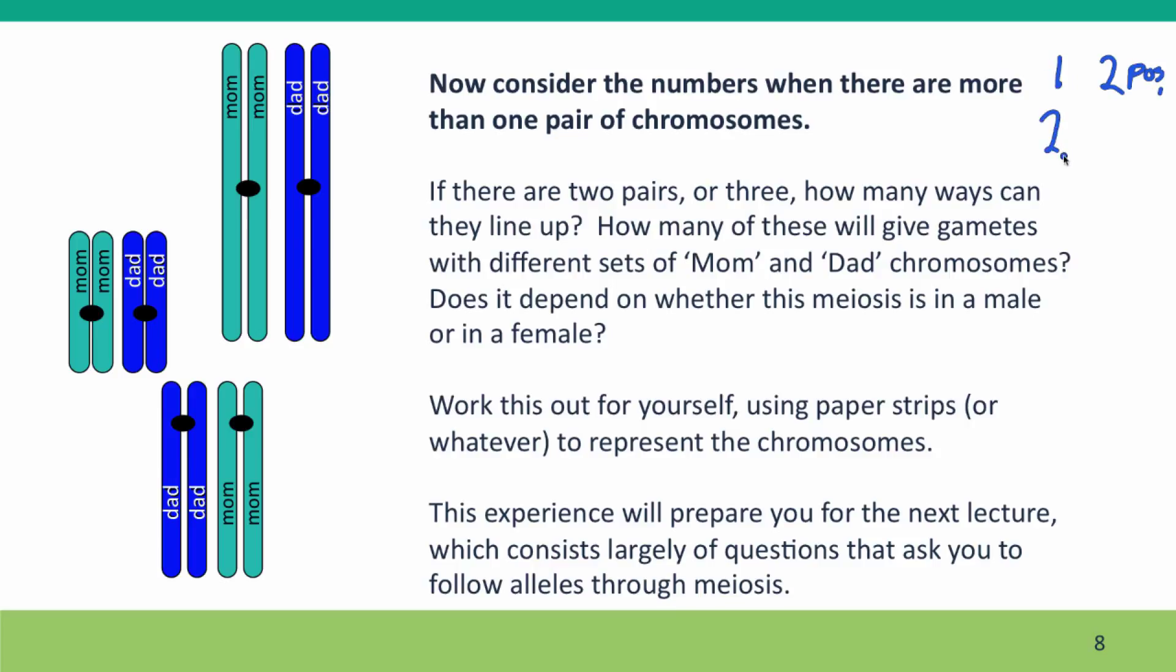If there are two chromosomes, there are four possibilities. If there are three chromosomes, there are eight possibilities. Again, considering situations where it matters whether the chromosome we're thinking about is on the left or the right, on the polar body side or the ovum side of the cell. And you can see a pattern. The numbers are actually going up as 2 to the n. So for 23 chromosomes, 2 to the 23 is actually a very large number.